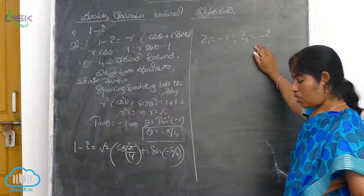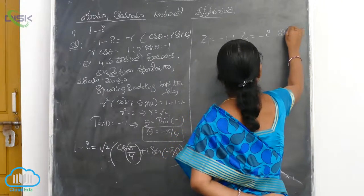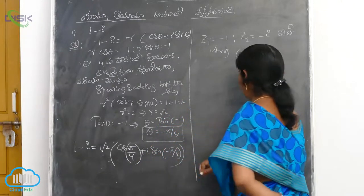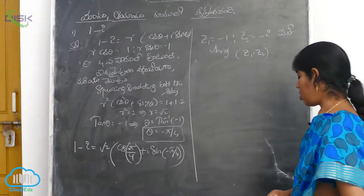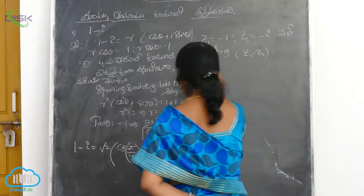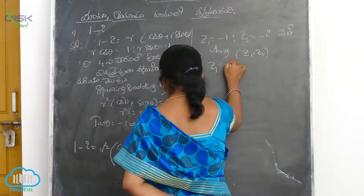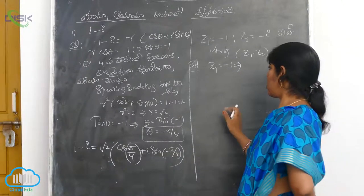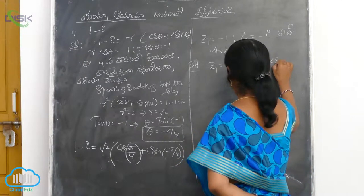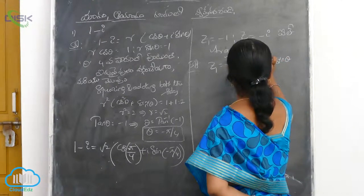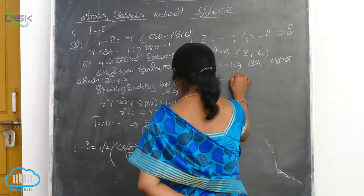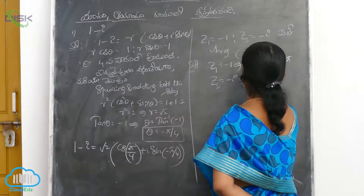So this is Z1 and Z2. Z1 is equal to minus 1. We start with cos theta plus i sin theta. Minus 1 equals cos theta minus i sin theta, which is cos phi plus i sin phi. Z2 is equal to minus i.